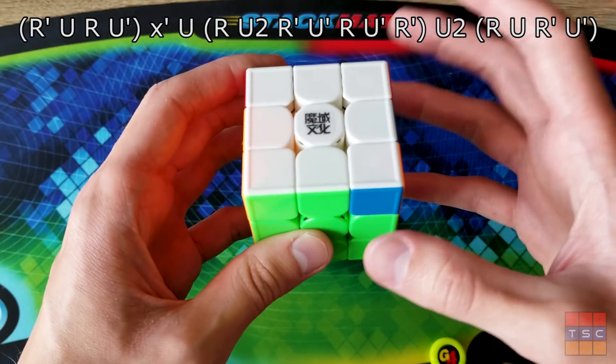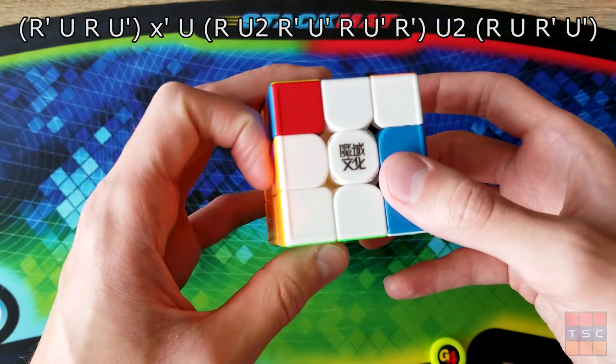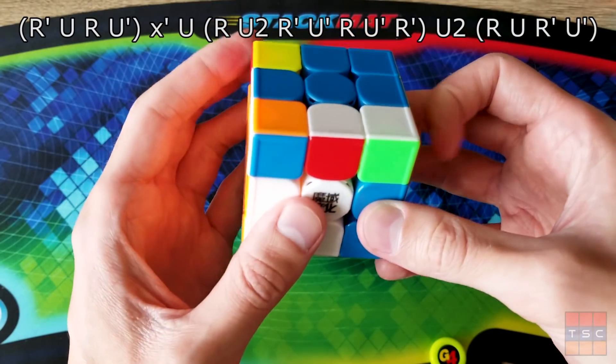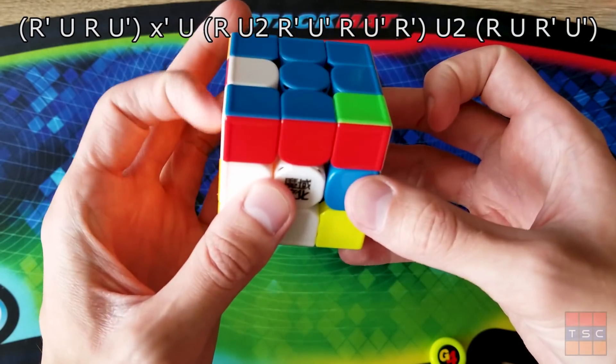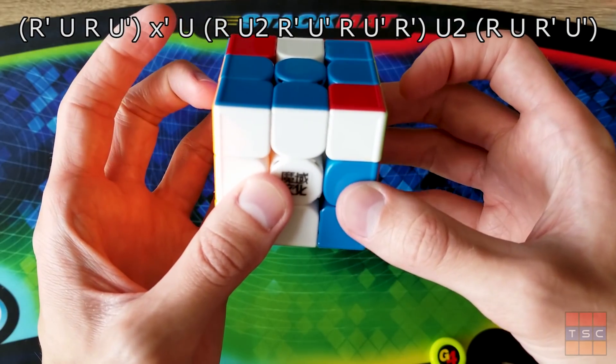One more time a little faster. Take your hand, re-grip it like this. R' U R U', do this little half rotation and the U move at the same time. And then do anti-sune R U2 R' U' R U' R'. Another U2 flick and then finish it off with a sexy move.